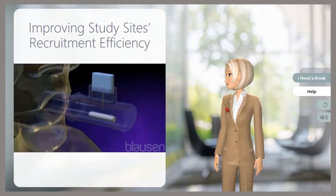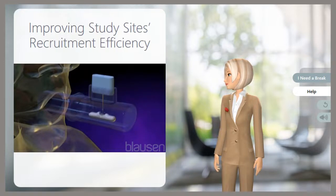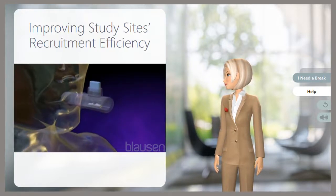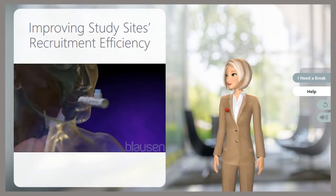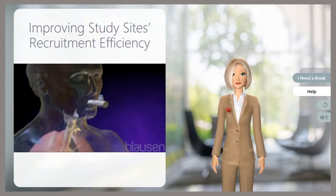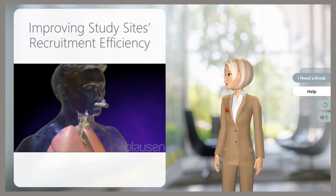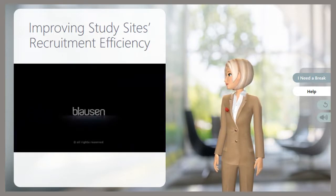干粉吸入器所含的药物是细小的颗粒,DPI吸入器释出药物的方法有许多。所有方法都要求患者先呼气,然后在吸入器释出药物时,迅速透过嘴巴吸入药粉。由呼吸启动这种药物治疗。